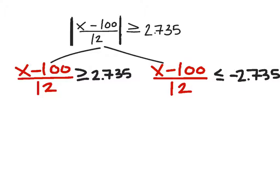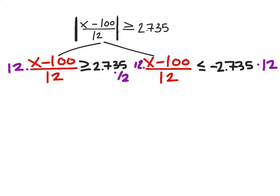Now what I need to do is get rid of the fraction by multiplying both sides of both inequalities by 12. What this does is it gets rid of the 12 denominators for both inequalities. Now I'm going to take 2.735 and negative 2.735 and multiply that by 12. The x minus 100 will stay the same. We multiplied both sides by positive, so it's not going to affect either inequality. That will still be greater than or equal to, and this one will also be less than or equal to still.